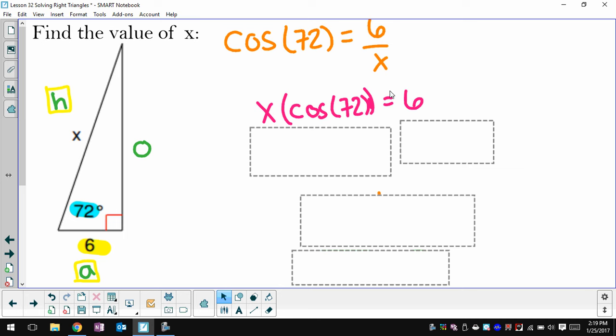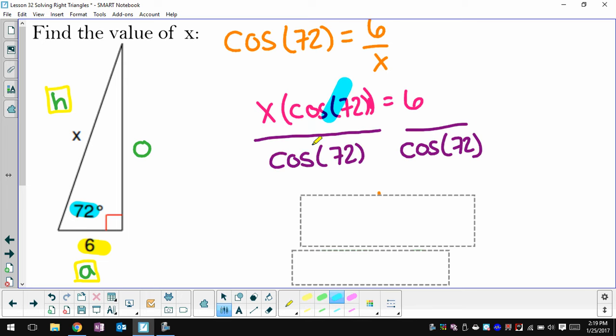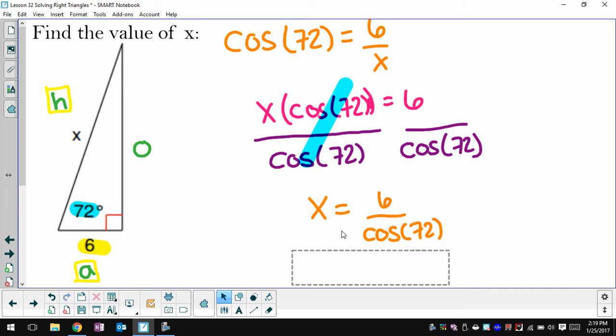Now I can multiply both sides by x to get this. x times cosine 72 equals 6. This cosine 72 represents one number. It's a decimal. We're going to move it before we plug it into the calculator so that we don't have to round. So I can divide both sides by that whole cosine of 72. And it'll cancel right there.